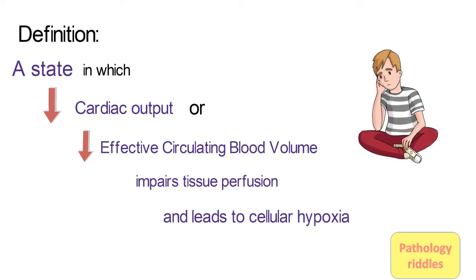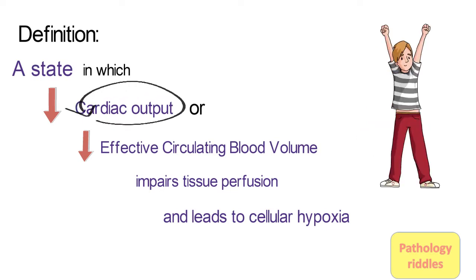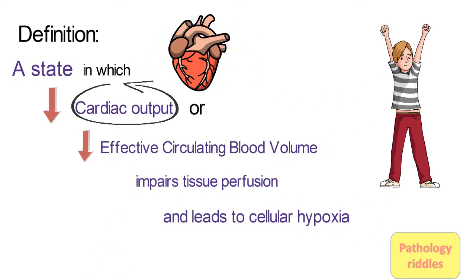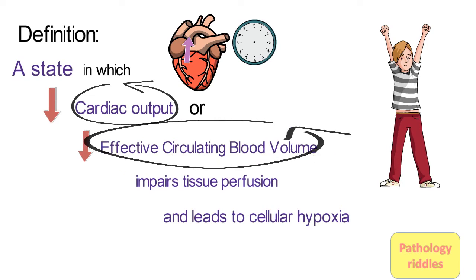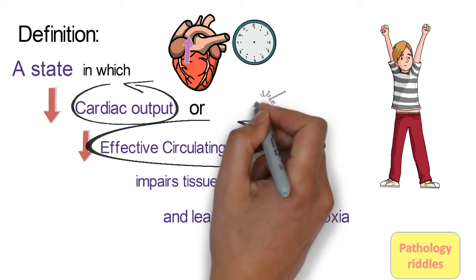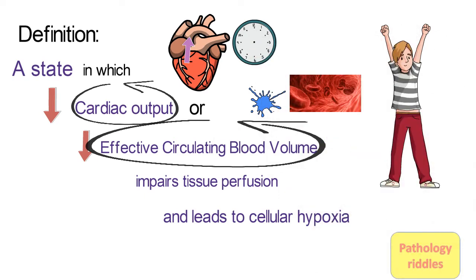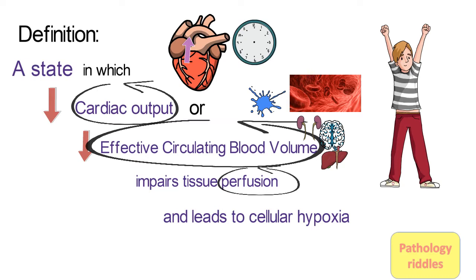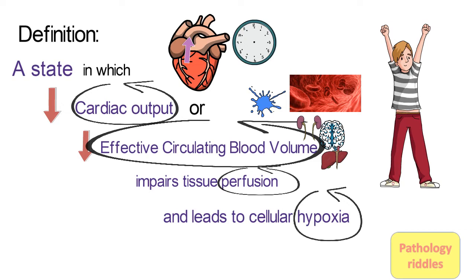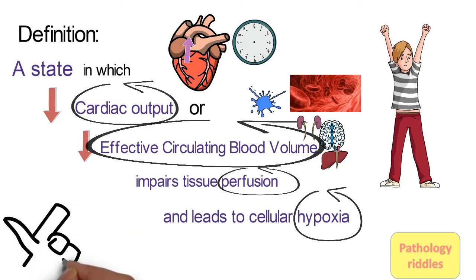Sounds complicated right? Let's make it easy. What is cardiac output? It is the quantity of blood pumped into the aorta each minute by the heart. What is effective circulating blood volume? This refers to the extracellular fluid that is within the vascular space and is effectively perfusing all the tissues. In simple words, shock is a state where the body tissues are getting less blood supply and oxygen due to decreased circulating blood available. Don't write this definition in the exams — write the one which I have written in front of you.